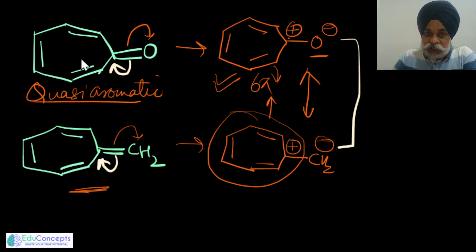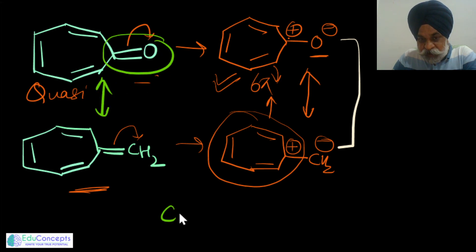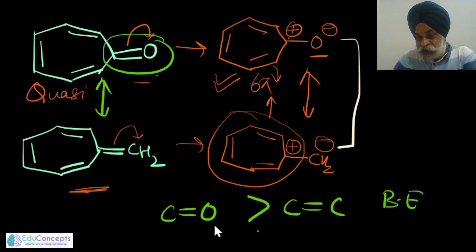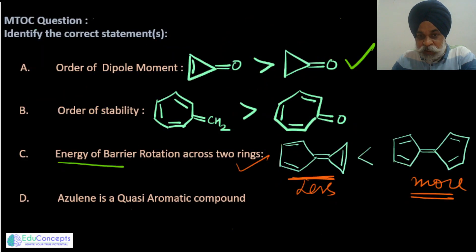Theoretically, comparing C–O bond versus C=C bond energy, the C–O bond energy is greater, which also justifies the first compound being more stable. However, this is a tough call. The conclusion is that the stability order given in option B appears to be wrong — this species should be more stable, so the stated order is incorrect.